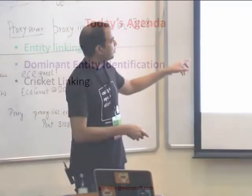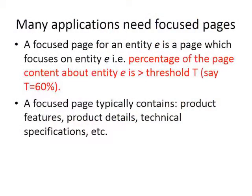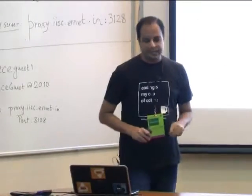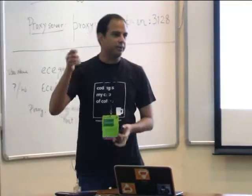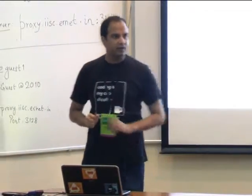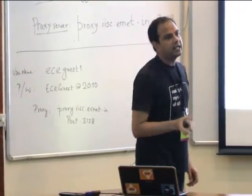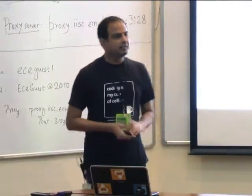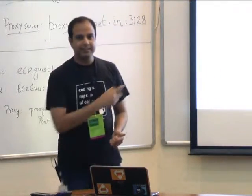That is what I call the Dominant Entity Identification problem: given a page, find all pages on the web about a specific entity. In Wikipedia it's trivial — en.wikipedia.org/Sachin_Tendulkar clearly links to Sachin Tendulkar as the entity ID. But Cricinfo's Sachin Tendulkar page is also about the same entity ID, and identifying that is not trivial. I will skip the second part of the talk and move to the third one — Cricket Linking.